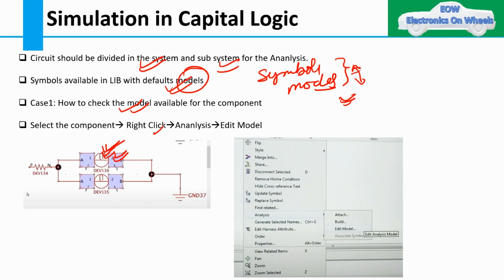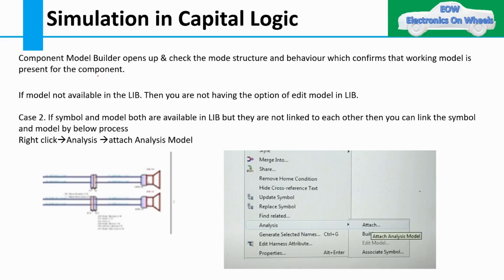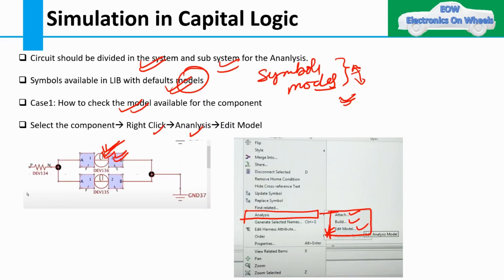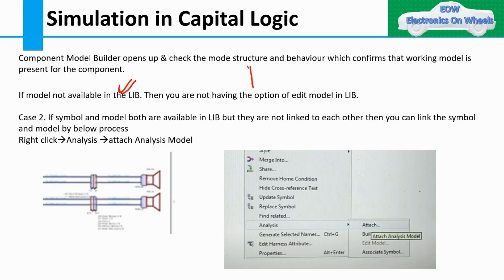Model and symbols are two things that need to be associated in the library and linked with each other. To check if a model is available for a component in the library: select that particular component, right-click, go to Analysis, then in the pop-up you will get three options — Attach, Build, and Edit Model. Go to Edit Model, and then Component Builder opens. Check the mode structure behavior, which confirms whether a working model is present for the component.